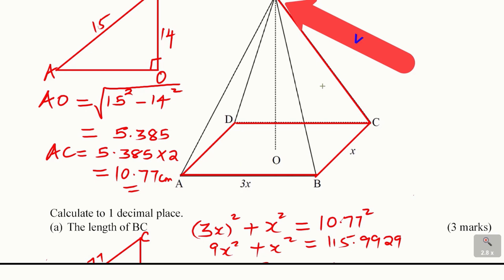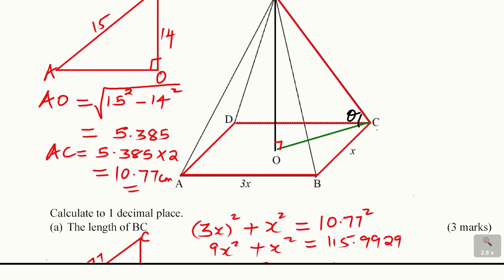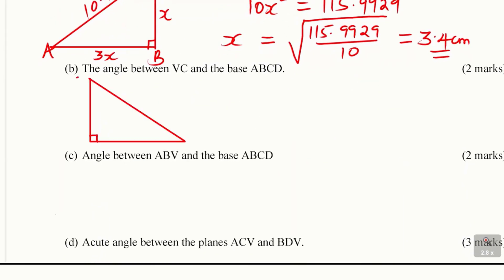The shadow or projection of VC is CO. So we need the angle between line VC and its projection CO. This forms a right-angle triangle VOC. Let's extract triangle VOC: V is the apex, O is the center, C is the base vertex. The required angle is at C.